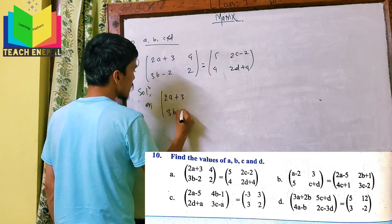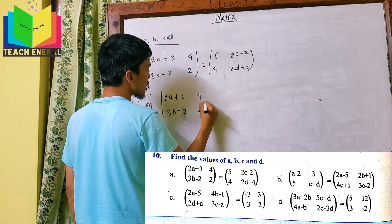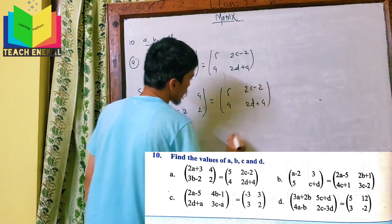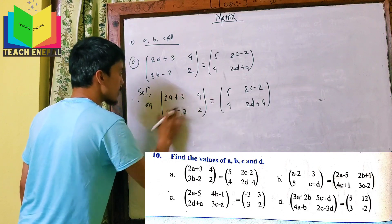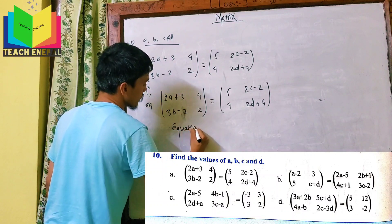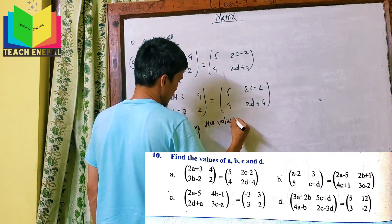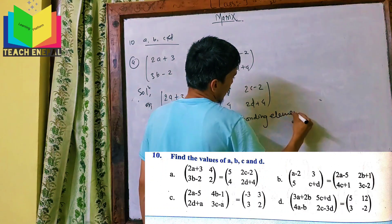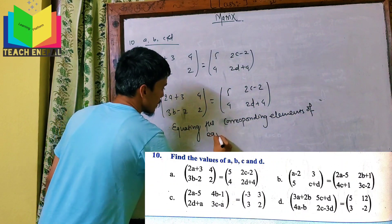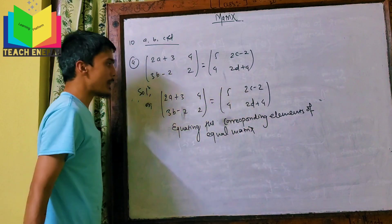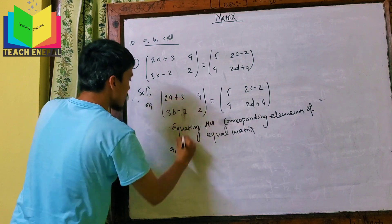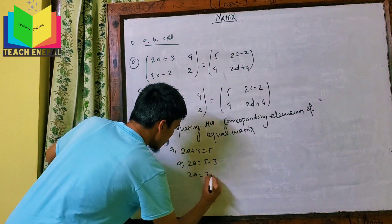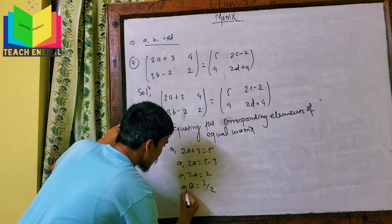From 2A+3 equals 5: 2A equals 5 minus 3, so 2A equals 2, therefore A equals 1. From 3B-2 equals 4: 3B equals 4 plus 2, so 3B equals 6, therefore B equals 2.